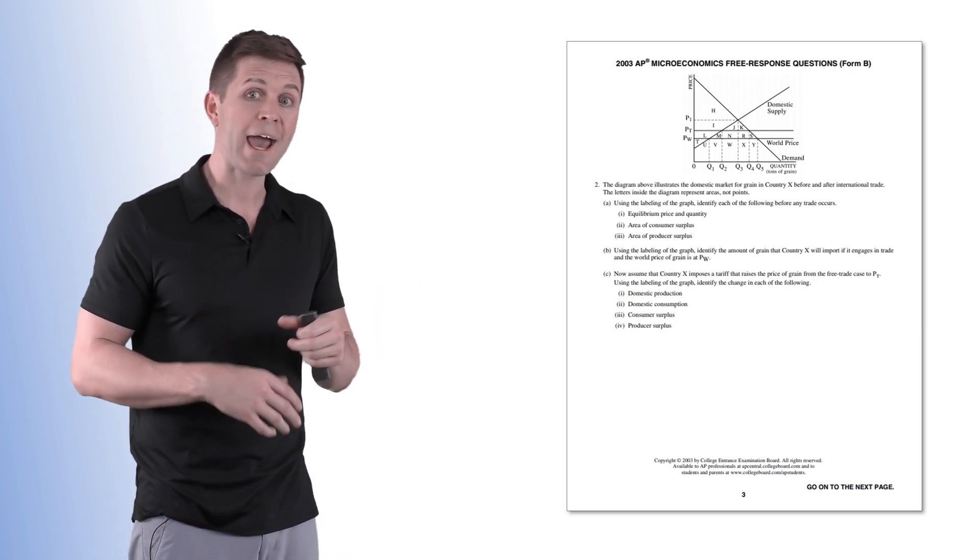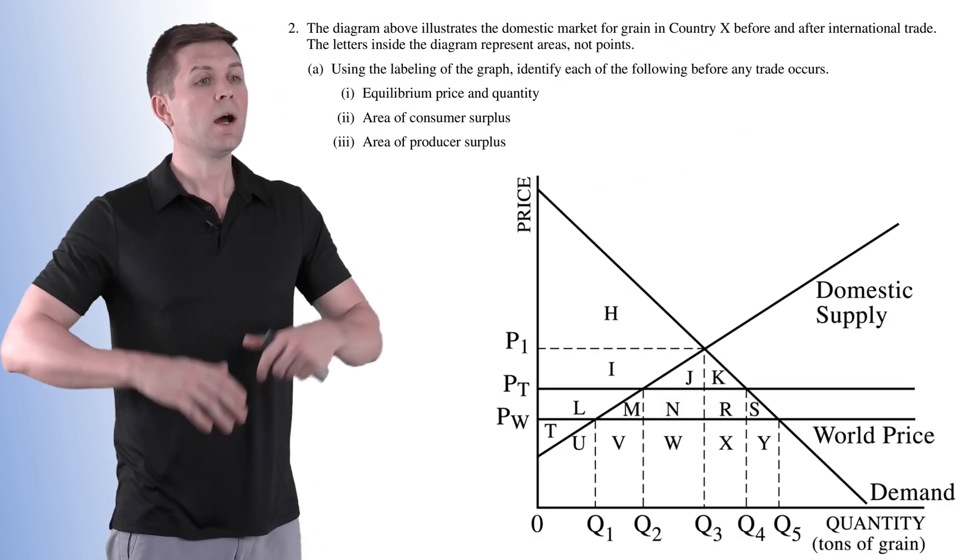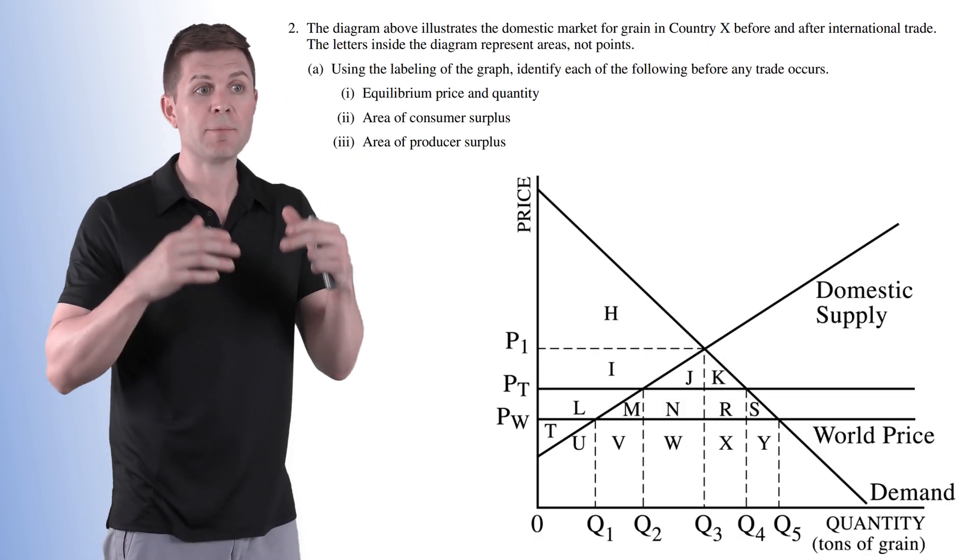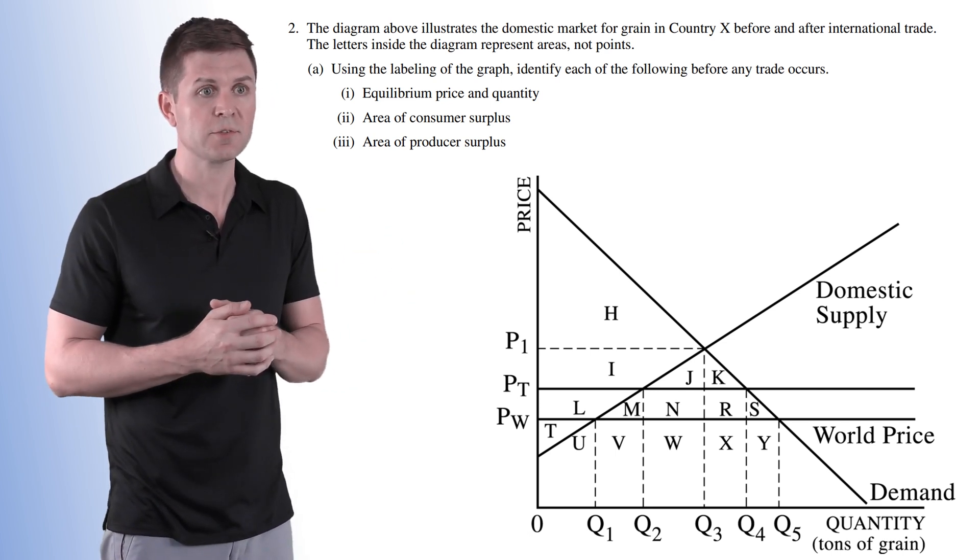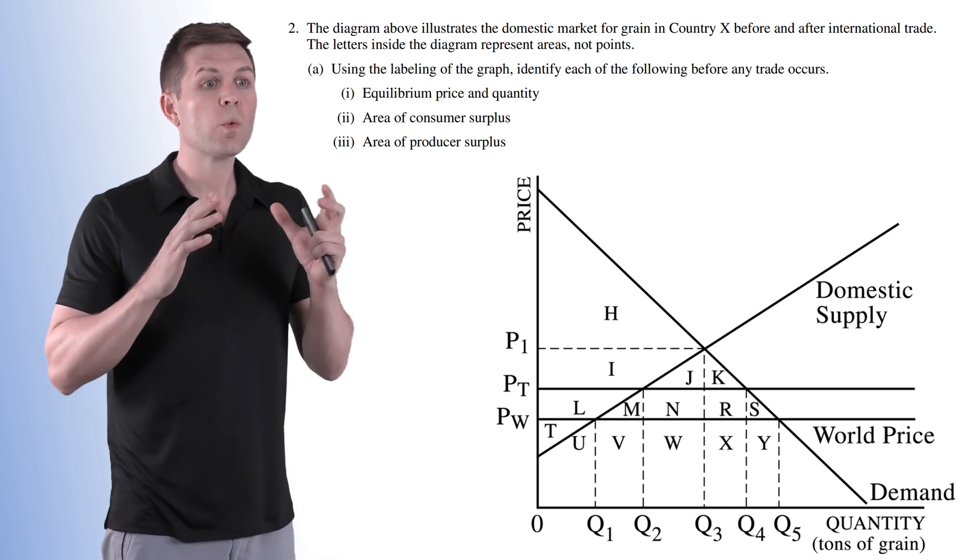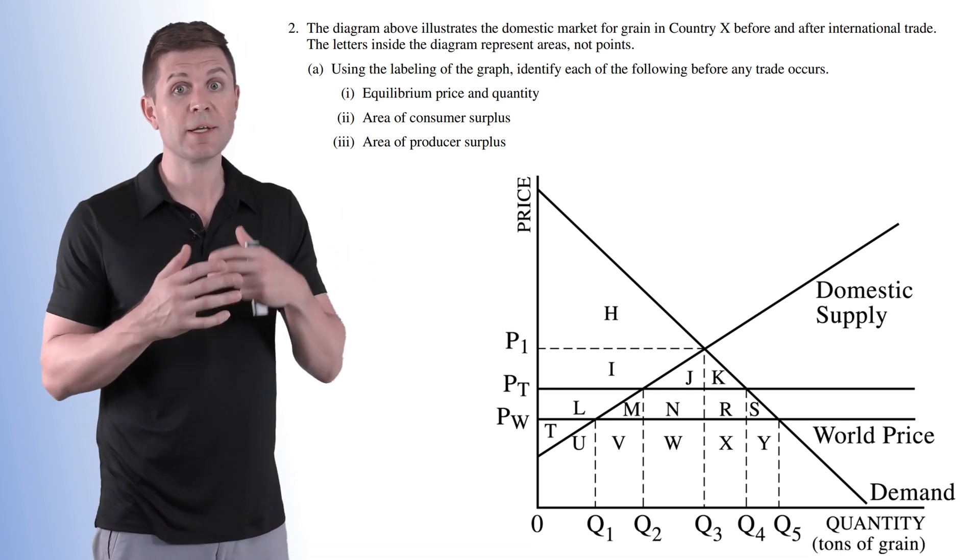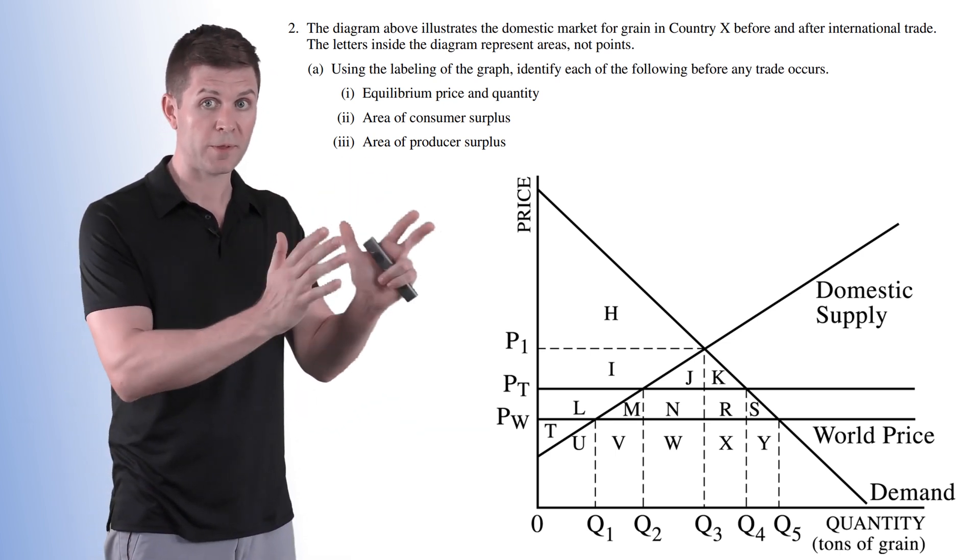Then part B we add in free trade or the open economy, and then in part C we add in a tariff. The question gives us a diagram that illustrates the domestic market for wheat in country X before and after international trade. The letters inside the diagram indicate different areas, not points on the graph, but areas within the graph.